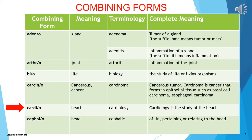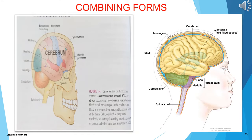Cardio- means heart; cardiology means the study of the heart. Cephalo- means head; cephalic means pertaining or relating to the head. Speaking of the head, take a look at the cerebrum and its functions. The cerebrum is the largest part of the brain, divided into two hemispheres called the cerebral hemispheres. Areas within the cerebrum control muscle functions and also control speech, thought, emotions, reading, writing, and learning.